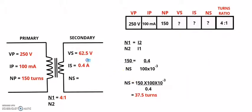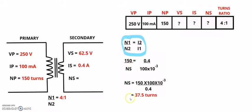Plot the secondary current of 0.4 amps on your sketch. Next, I need the secondary turns of the transformer, using the turns and current ratio: 150 divided by Ns equals 0.4 divided by 100 times 10 to the power of minus 3. Solving gives secondary turns Ns equals 37.5.